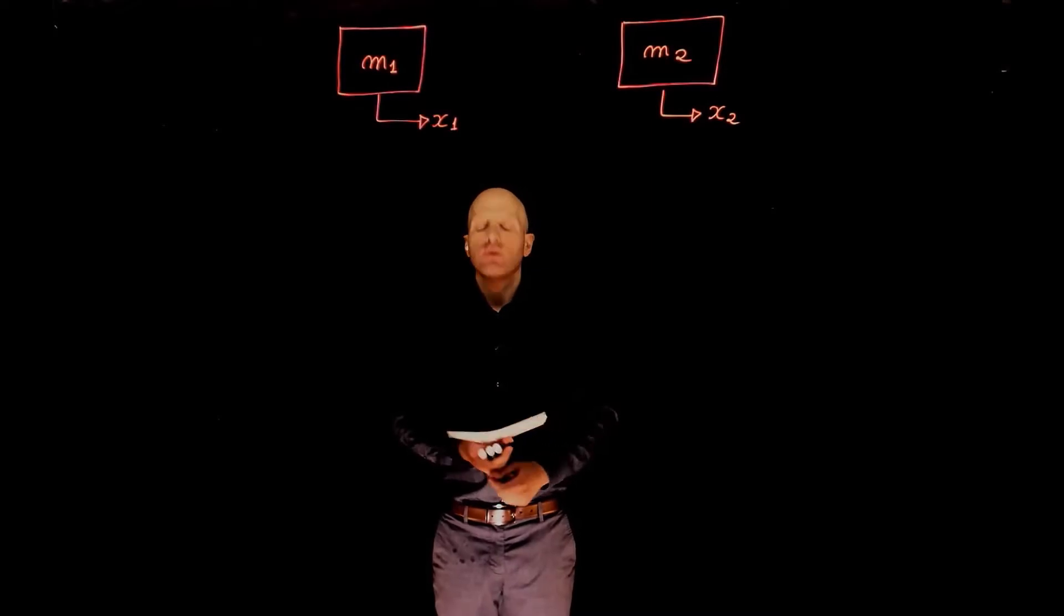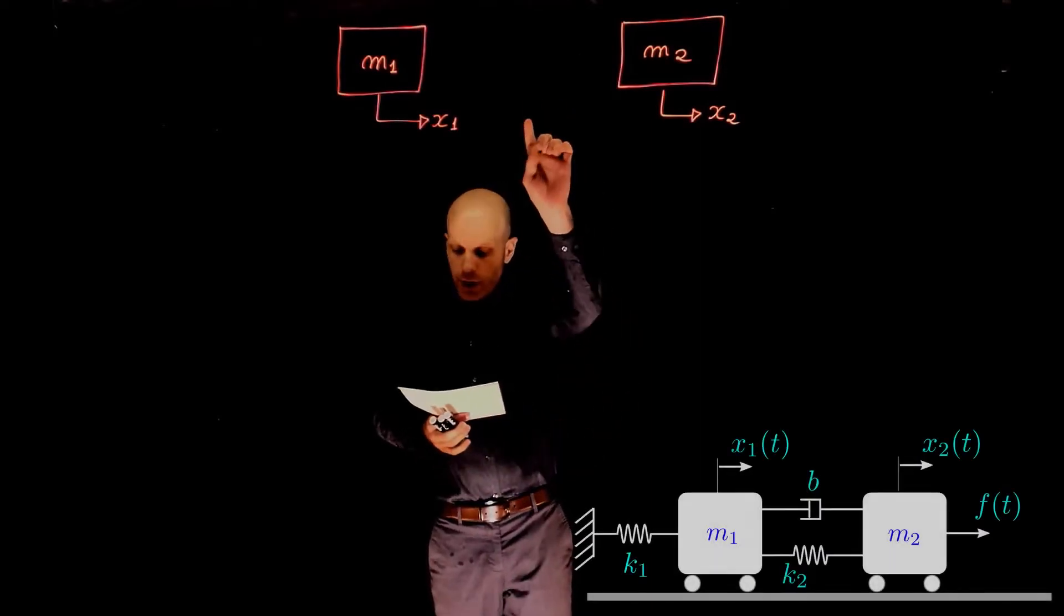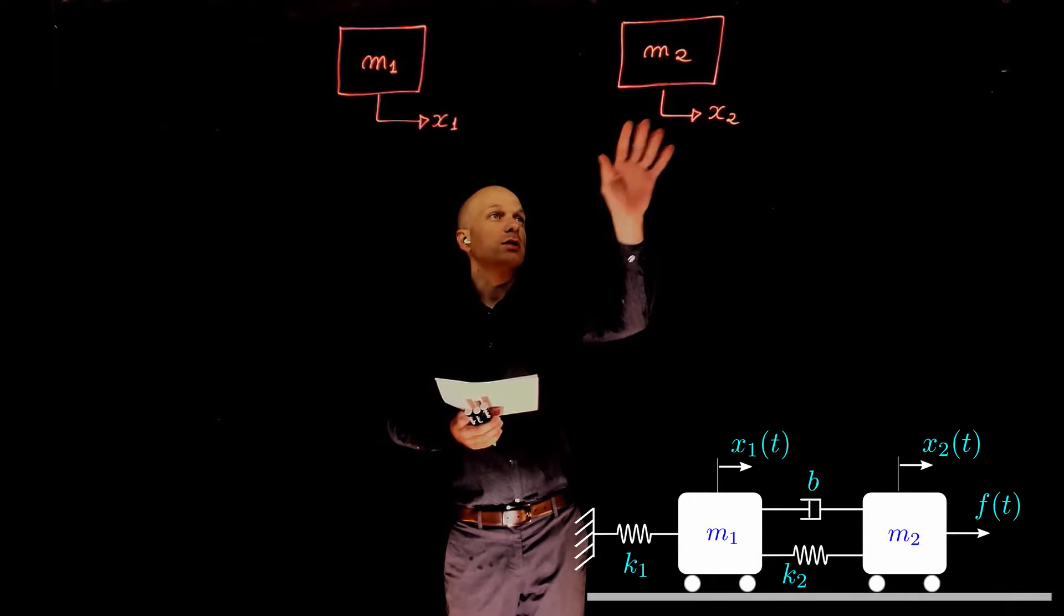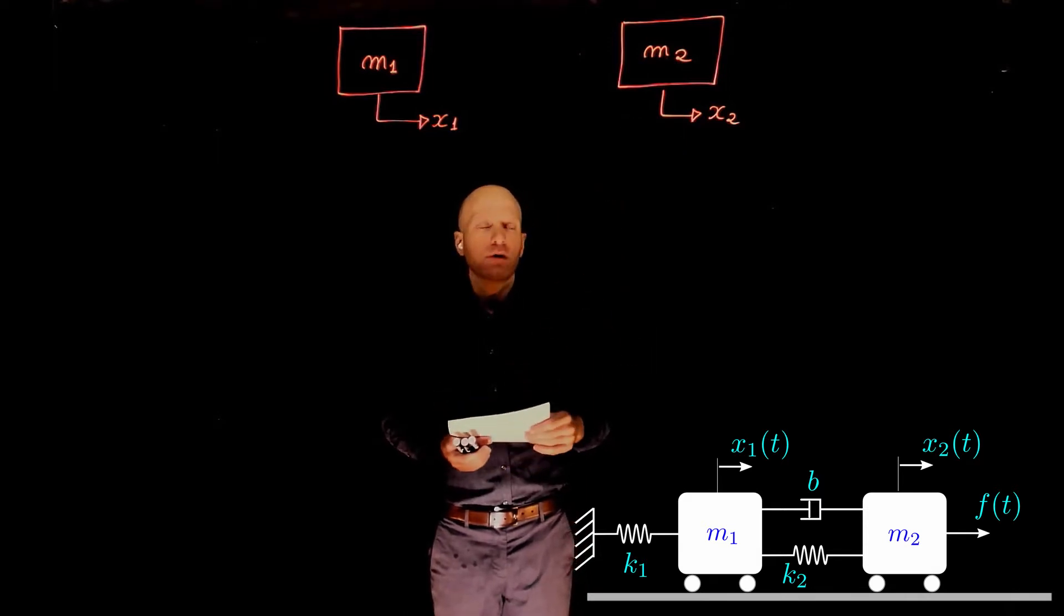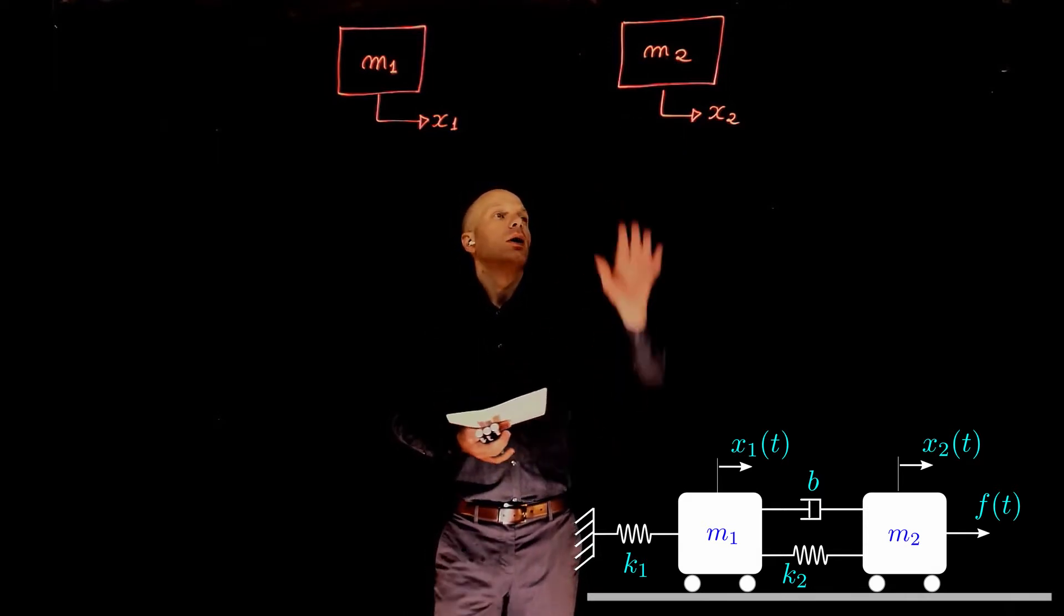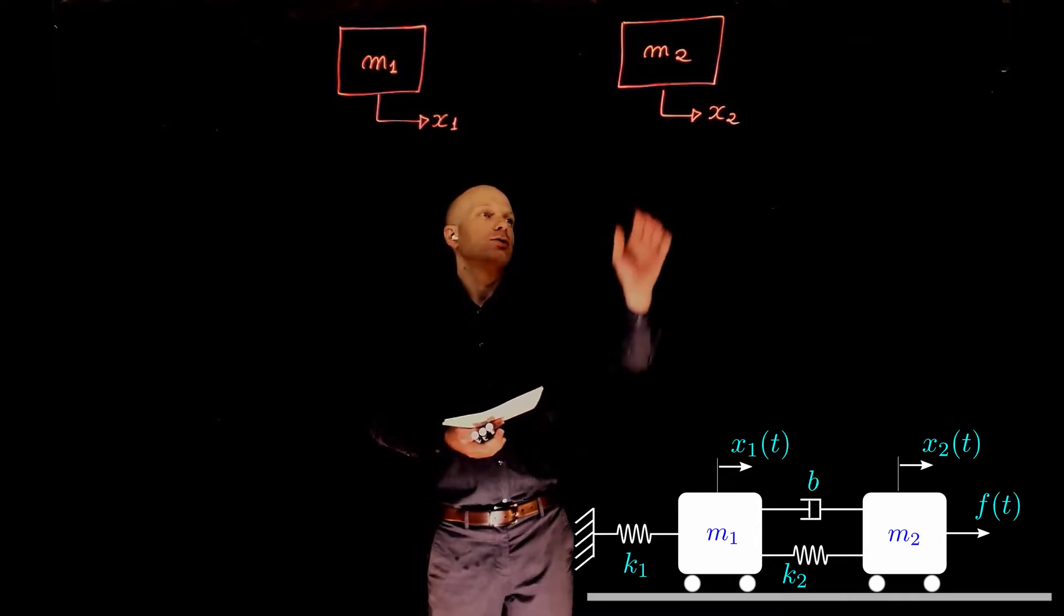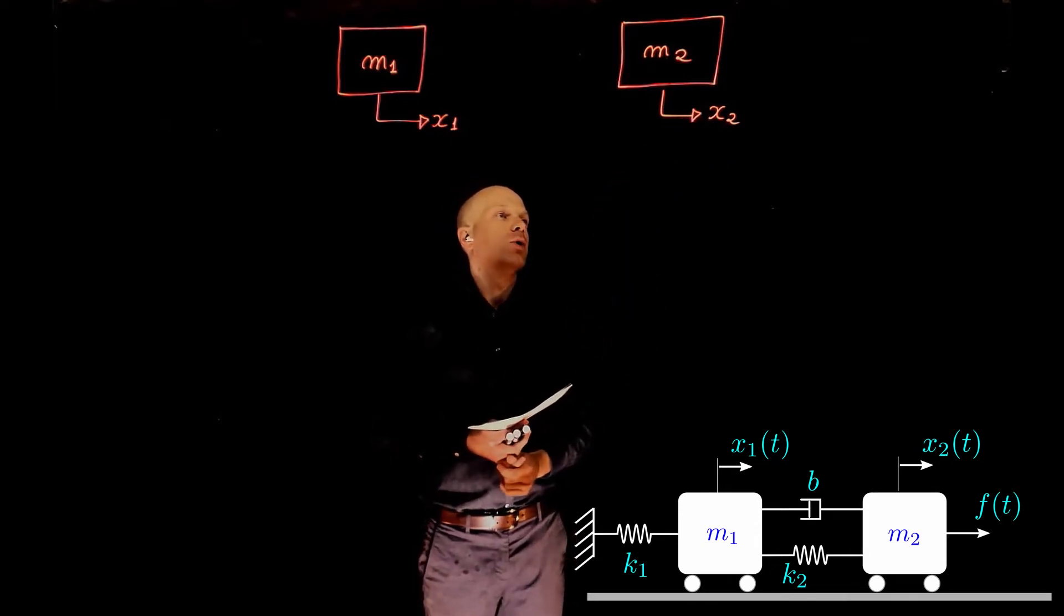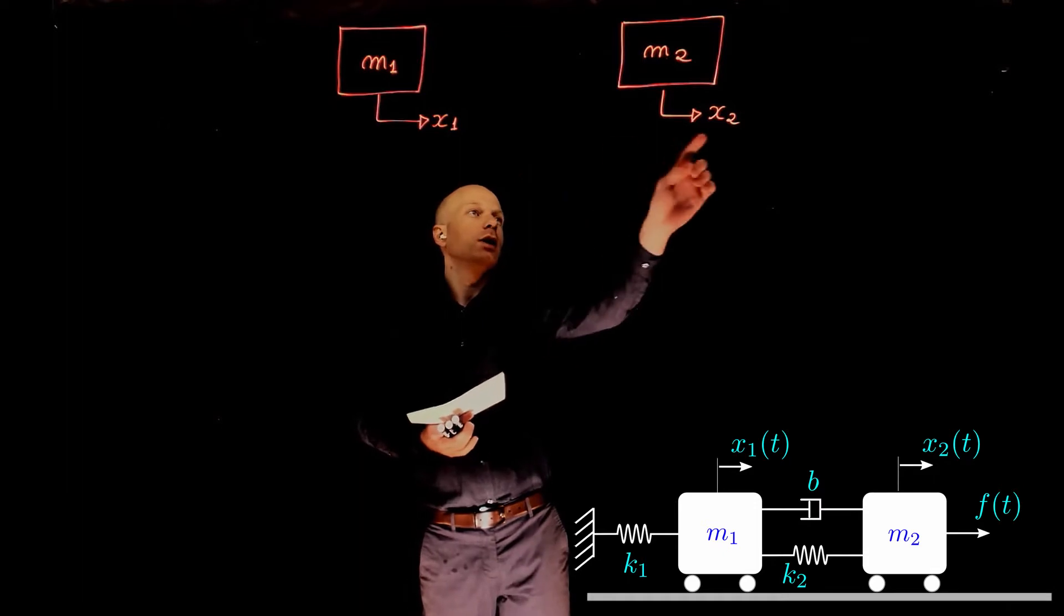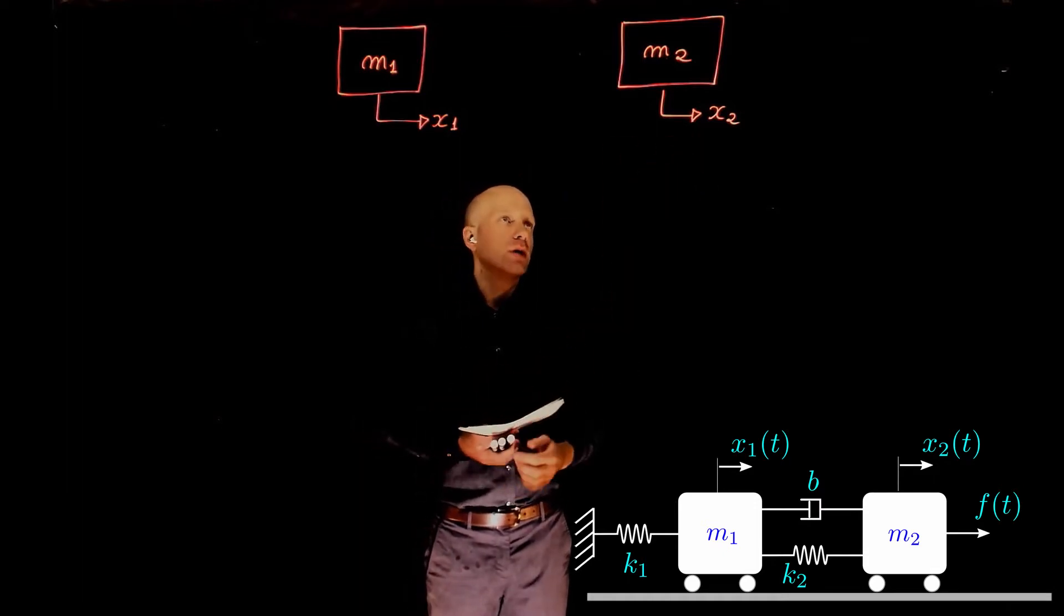In this system, we have two masses connected through a damper and a spring, and the mass M2 is subjected to a force F. Let's create the free body diagram for both masses assuming that the displacement of mass M1 is x1 and the displacement of mass M2 is x2.